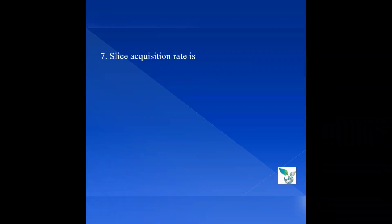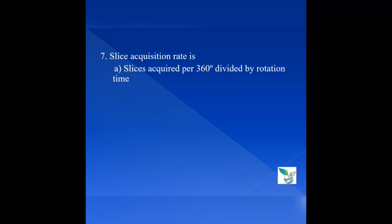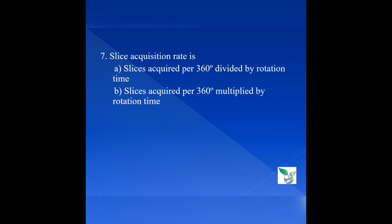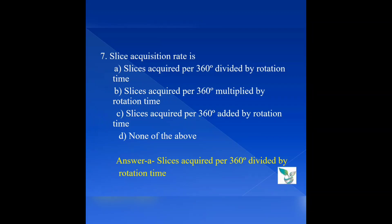Question 7: Slice acquisition rate is — Option A: Slices acquired per 360 degrees divided by rotation time, Option B: Slices acquired per 360 degrees multiplied by rotation time, Option C: Slices acquired per 360 degrees added by rotation time, Option D: None of the above. The answer is Option A: Slices per 360 degrees divided by rotation time. The slices are acquired by continuous rotation of the X-ray tube and detector divided by the rotation time, which gives the slice acquisition rate.